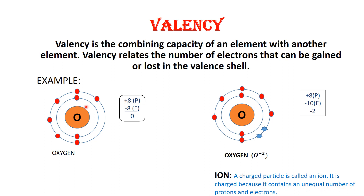Previously, the oxygen atom had eight protons and eight electrons, which showed that the atom was not charged. But after gaining two electrons, it gained a negative charge because the number of protons and number of electrons are not the same. So when they are not the same, it becomes a charged particle, which is called an ion.